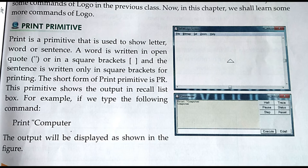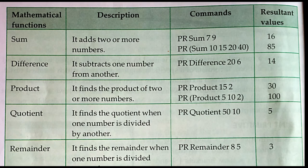This Print Primitive Command is used to display some messages. If I say PR Computer, that is Print Computer, then the output will be displayed. And on the Logo screen, you can see there is one triangle shape that is called Turtle. That component is called Turtle, and the Turtle moves on the main screen according to the commands we are giving.